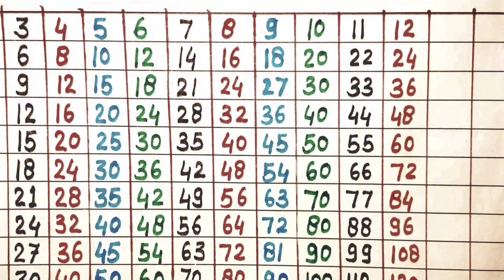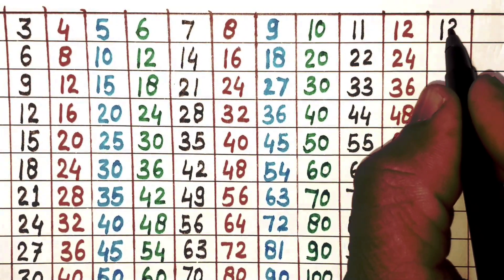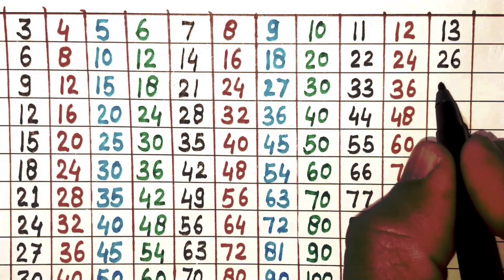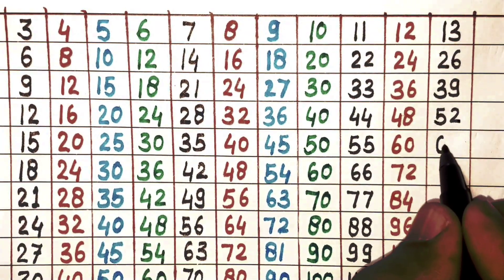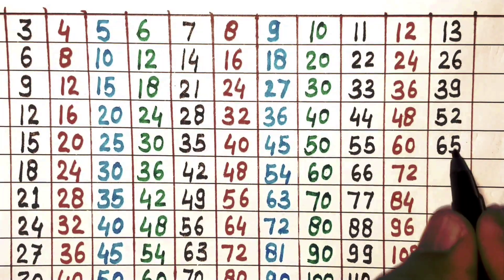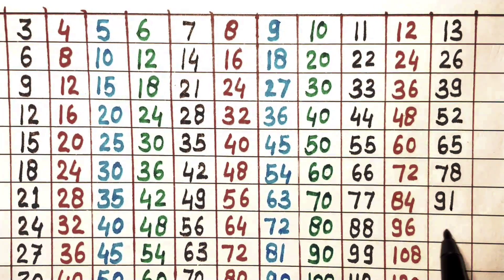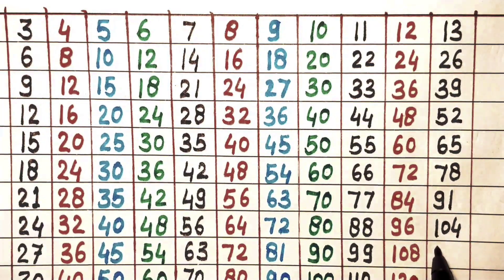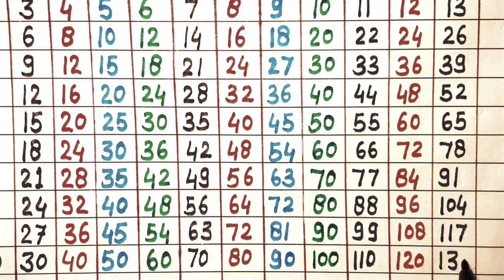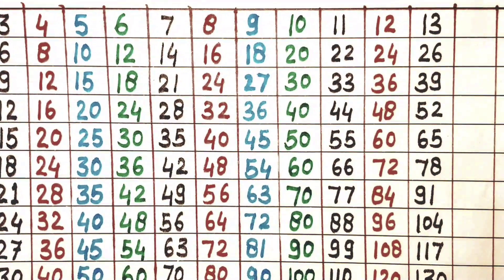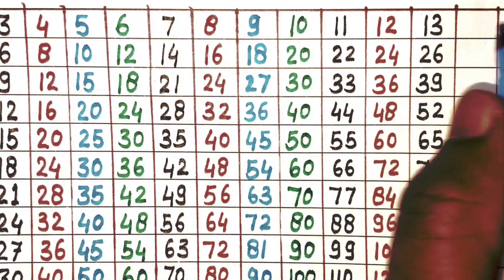Next 13. 13×1 is 13, 13×2 is 26, 13×3 is 39, 13×4 is 52, 13×5 is 65, 13×6 is 78, 13×7 is 91, 13×8 is 104, 13×9 is 117, 13×10 is 130.